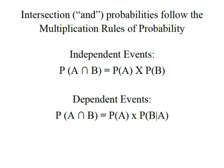When we have independent events, where A and B are totally unrelated, to find the probability of A intersection B, or A AND B, we simply take the probability of A times the probability of B. But what happens when we have dependent events?